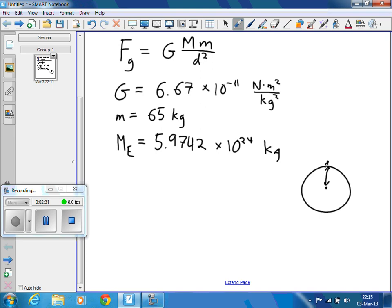The distance between me and the center of Earth is about equal to the radius of the Earth, which is pretty well known. So I'm going to use that. The radius of Earth is equal to 6.378 times 10 to the 6th meters.